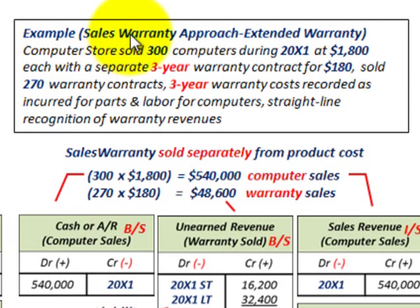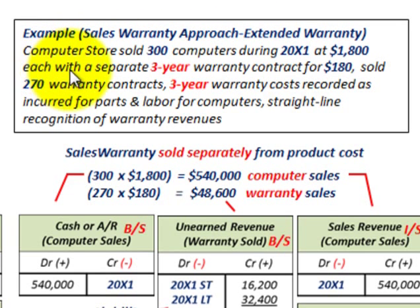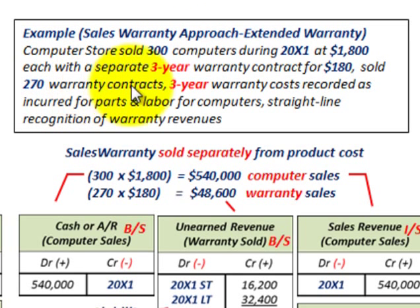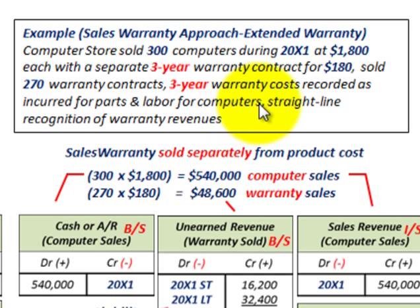We're going to look at this using the sales warranty approach. In our example, a computer store sold 300 computers during 20x1 at $1,800 per computer. They also sell a separate 3-year warranty contract at $180 each. In this example, they sold 270 of those warranty contracts. The costs are recorded as incurred for parts and labor, and we use straight-line recognition for warranty revenues.